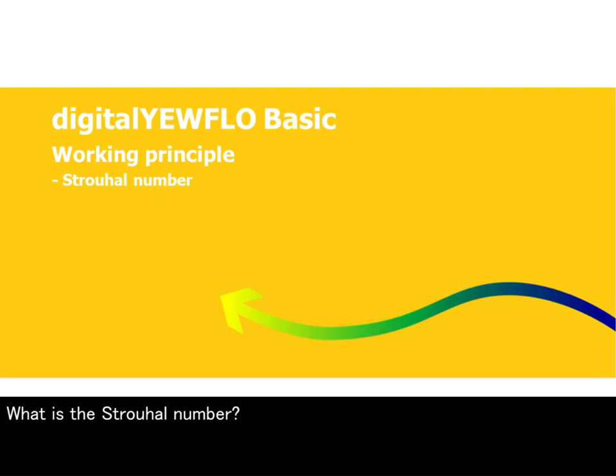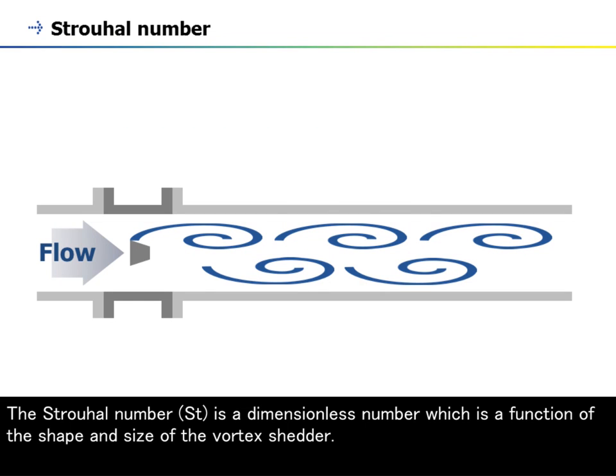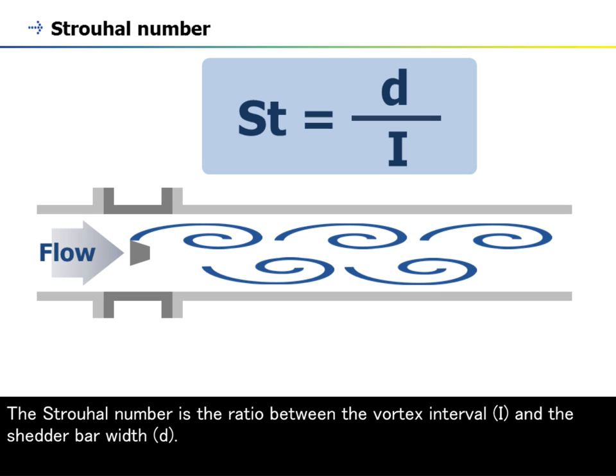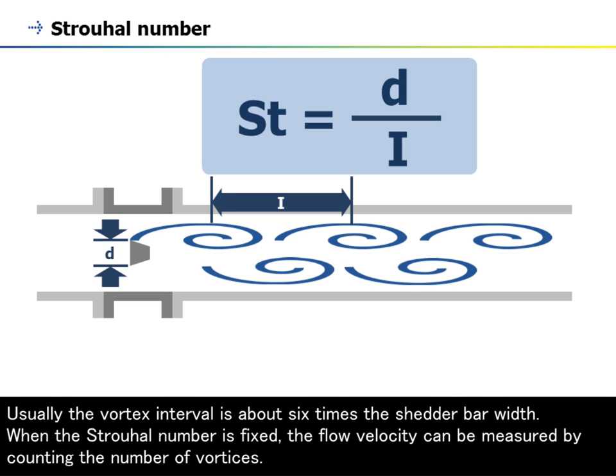What is the Strouhal number? The Strouhal number, St, is a dimensionless number which is a function of the shape and size of the vortex shedder. The Strouhal number is the ratio between the vortex interval and the shedder bar width. Usually the vortex interval is about six times the shedder bar width. When the Strouhal number is fixed, the flow velocity can be measured by counting the number of vortices.